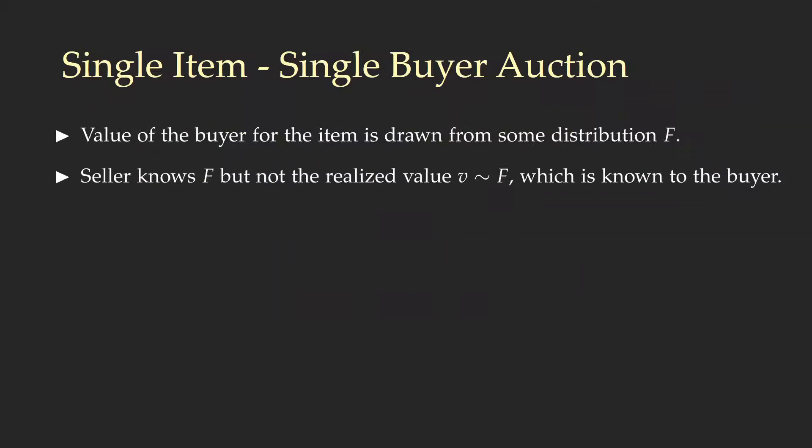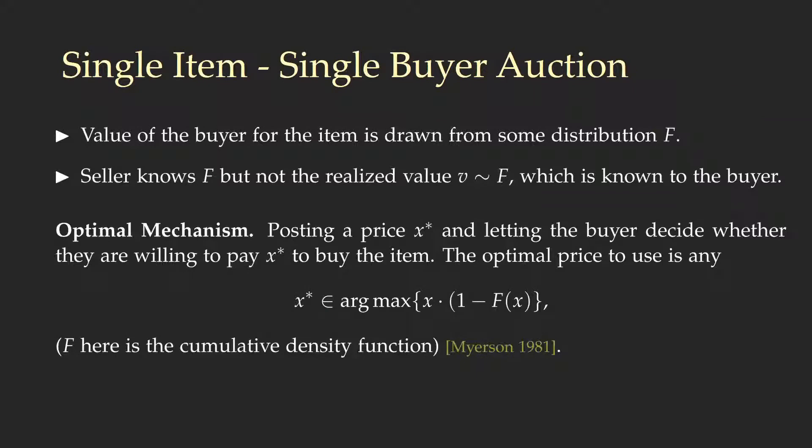In the single-item Bayesian buyer auction setting, the value of the buyer for the item is drawn from some distribution F. It is a classical assumption in this setting that the seller knows the distribution F but doesn't know the realized value v that is drawn from F, which is only known to the buyer.